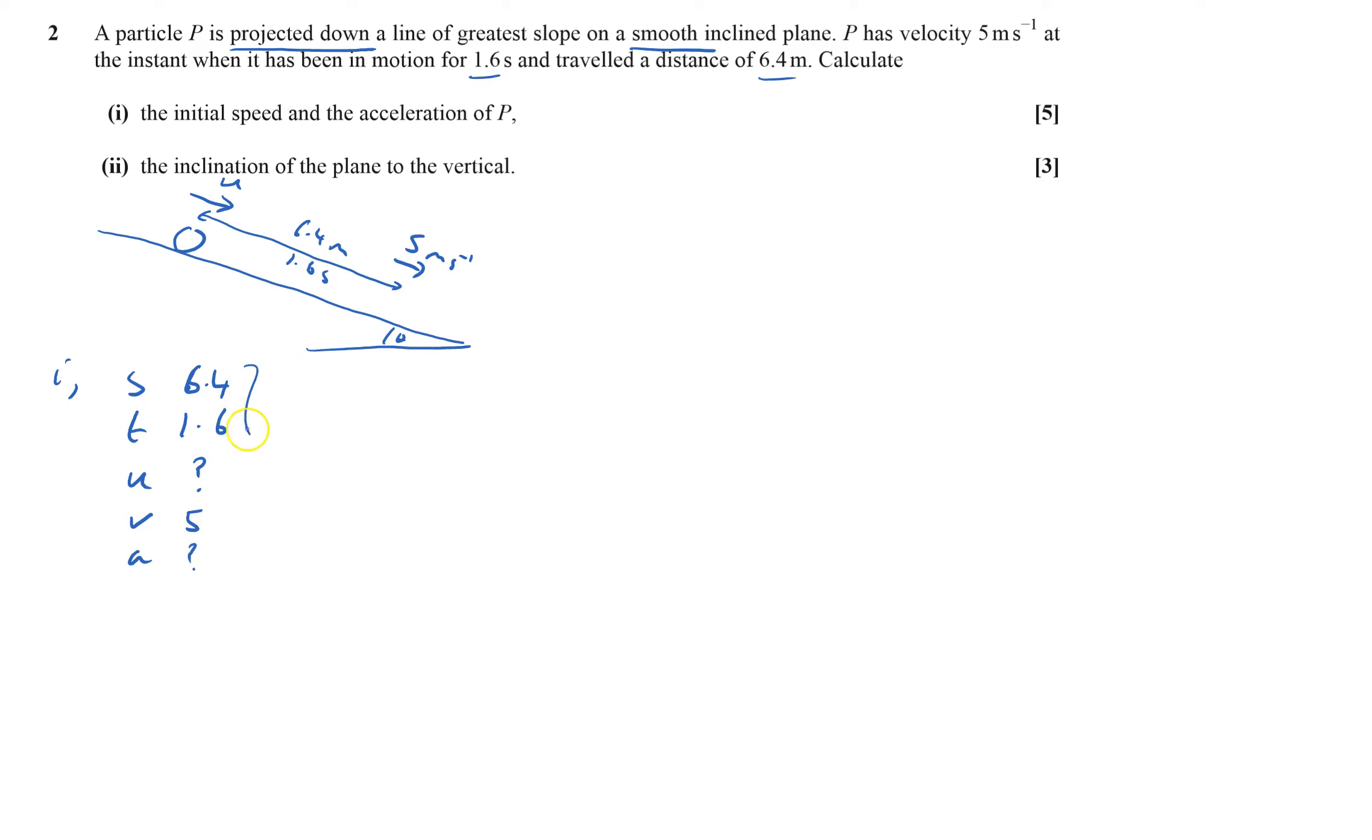Let's work out the speed first. Let's use these here, not the acceleration one, so that'll be the one without a. That's s equals a half of u plus v times t.